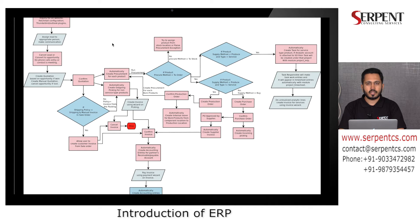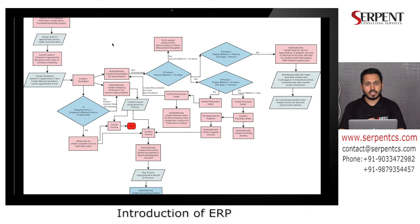ERP stands for Enterprise Resource Planning. The three words — Enterprise, Resource, and Planning — are self-explanatory about what ERP is. Enterprise means a group of people who are working together to achieve the same goal; that is called an Enterprise.